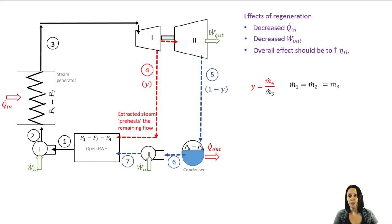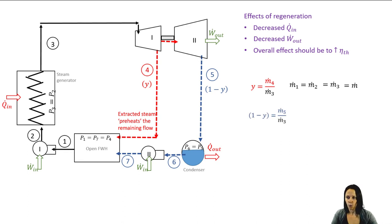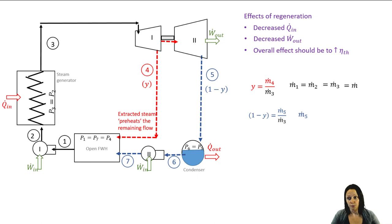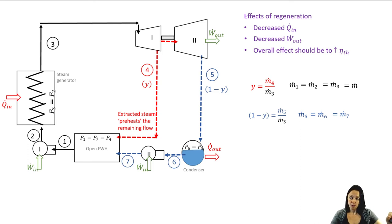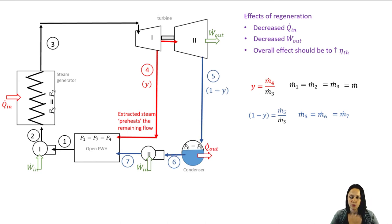M-dot-one, M-dot-two, and M-dot-three are all equal to one another — that's all the flow joined together, and I'll just call that M-dot. One minus Y is the fraction of steam allowed to fully expand in the low-pressure turbine, so this is M-dot-five divided by M-dot-three. M-dot-five, M-dot-six, and M-dot-seven are all equal to one another, and M-dot-four is by itself. I've drawn dotted lines on the diagram to indicate it's not the full flow, but typically you'll see these drawn as solid lines, and that's how I'll do it going forward.